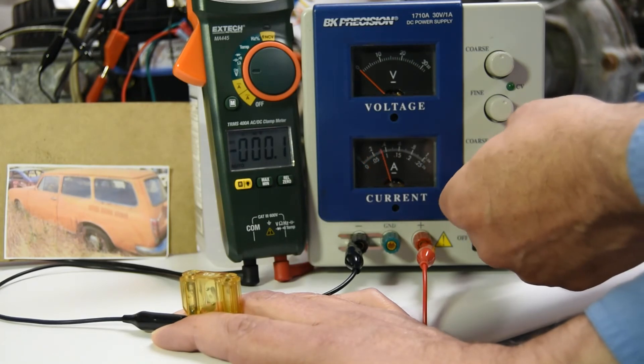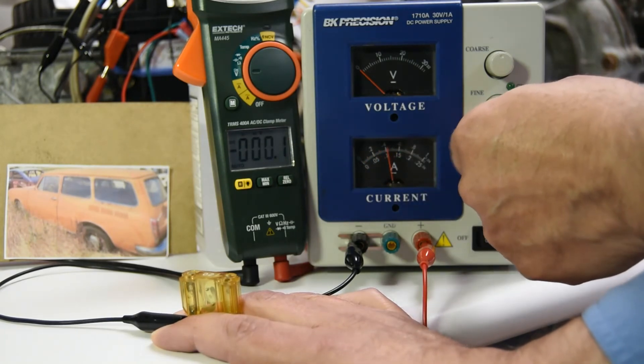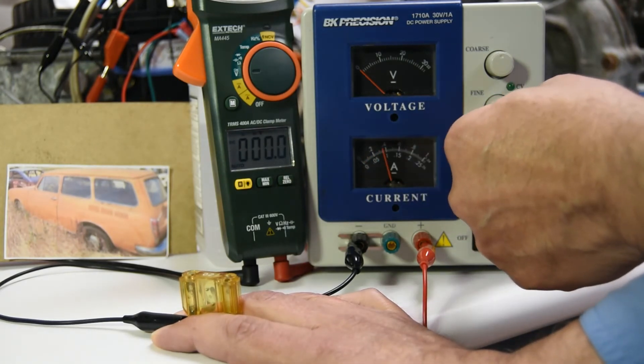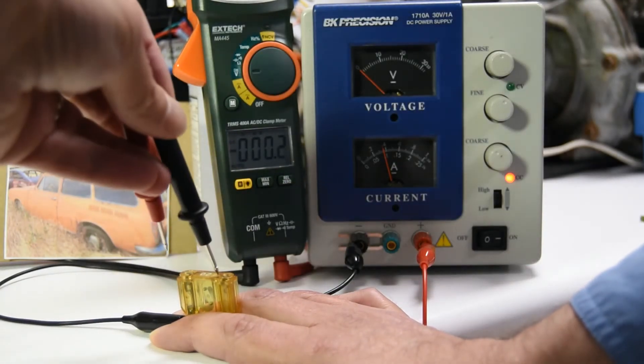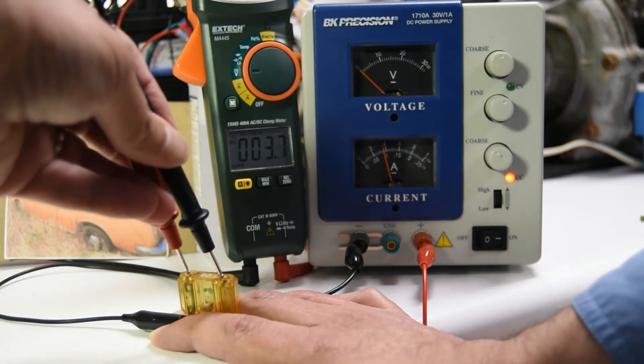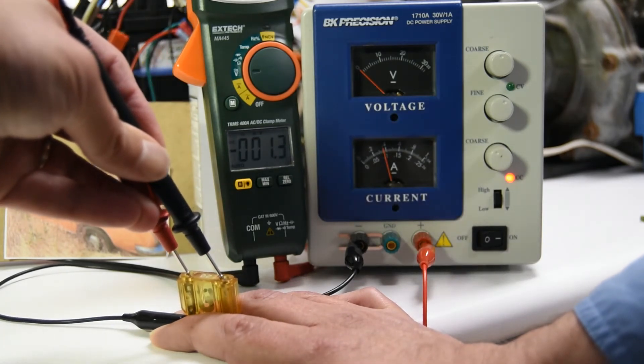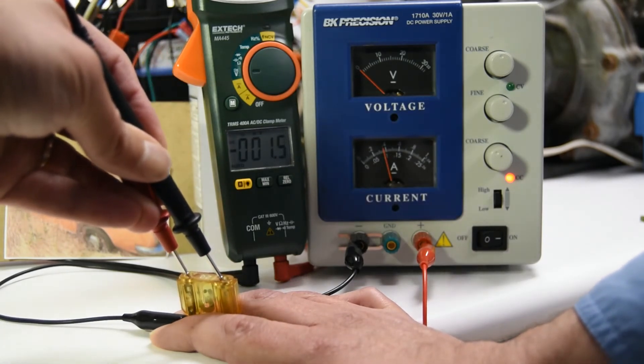All right, so that's minus 0.06. Now, what if I'm putting 4 tenths, 3 tenths, 4 tenths of an amp through this fuse? Should I get the same reading? No, I shouldn't. And I don't.